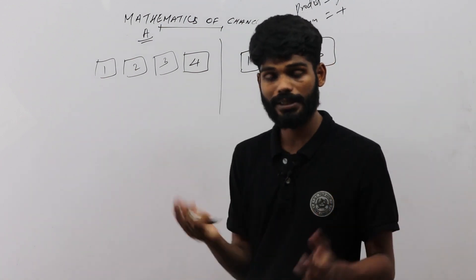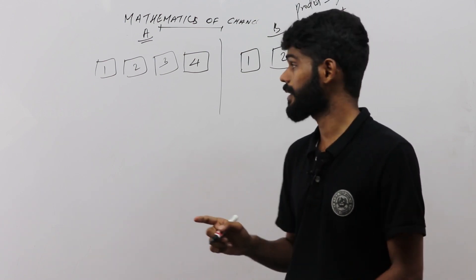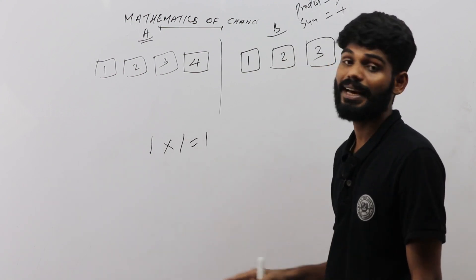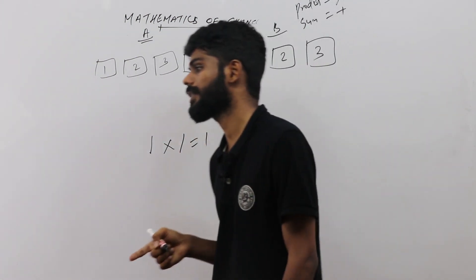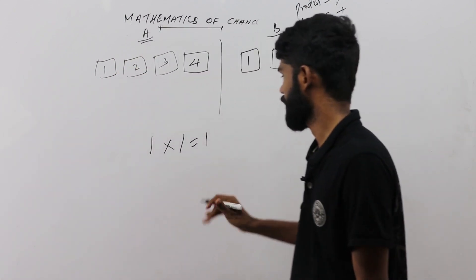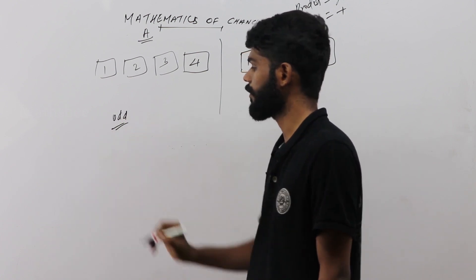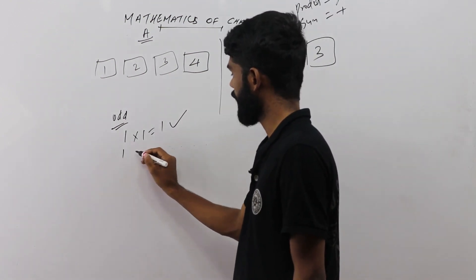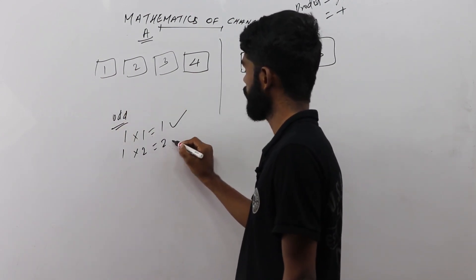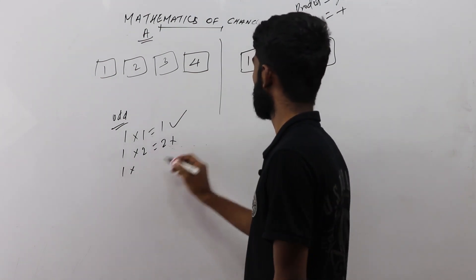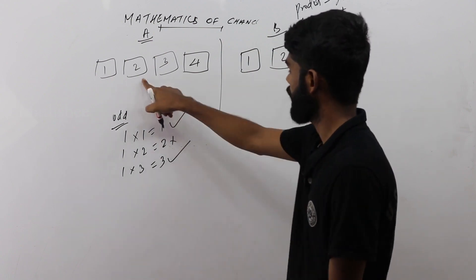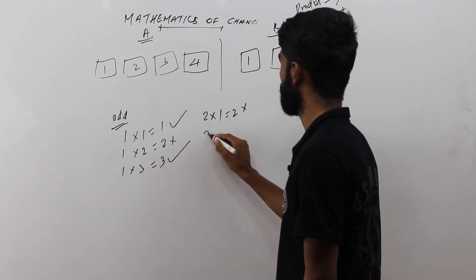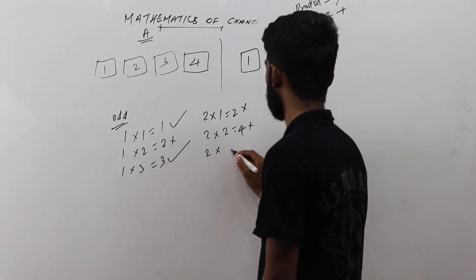Now we check which products are odd. 2×1=2, which is even — wrong. 2×3=6, also wrong. We are looking for odd products only. 1×1=1 and 1×3=3 are odd. 2×1=2 is wrong, 2×3=6 is wrong.